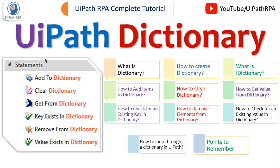At the last we will see what are the points that need to be remembered. On the left side you can see these are the activities of dictionary: add to dictionary, clear dictionary, get from dictionary, key exist in dictionary, remove from dictionary, and value exist in dictionary. I am going to cover most of the things here in this video. So let's start.